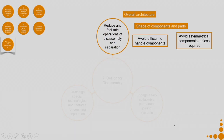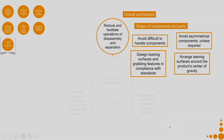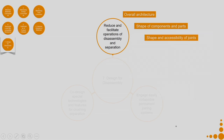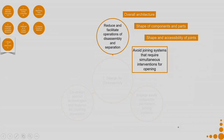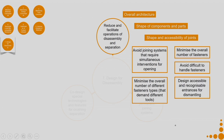At the shape and accessibility of joints level: avoid joining systems that require simultaneous interventions for opening — it makes it difficult. Minimize the overall number of fasteners. Minimize the overall number of different fastener types that demand different tools. Avoid difficult-to-handle fasteners. Design accessible and recognizable entrances for dismantling.